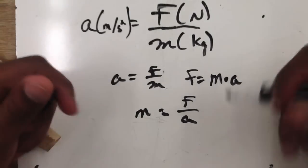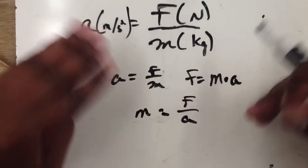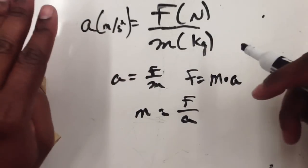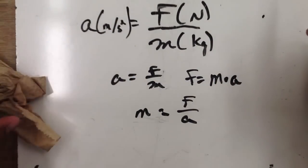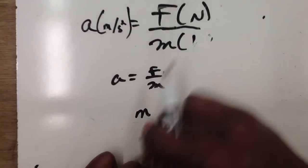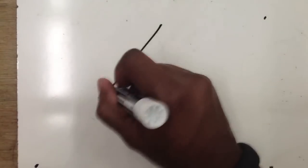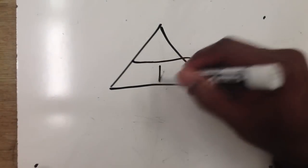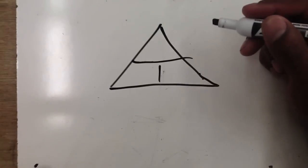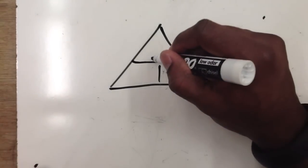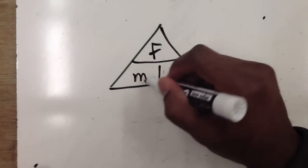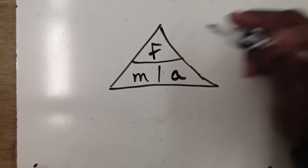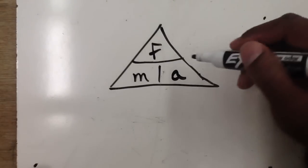I'm going to show you an easier way to help you navigate these equations — you'll see this a lot when we start doing speed, distance, and time problems. Draw a little triangle and put F on top, then m and a on the bottom. That stands for force, mass, and acceleration.